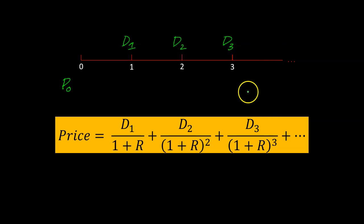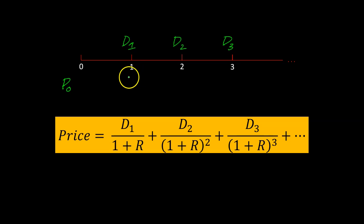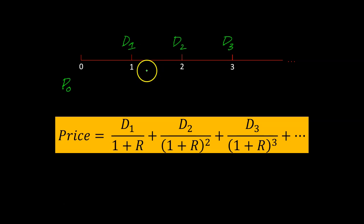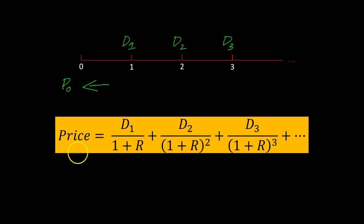This is a powerful result, because when we started, we said price today is a function of the dividend one year from now and the price one year from now — but remember that price at any given point is a function of future dividends, and that is what the dividend discount model says. It says that the price today of a stock is simply the discounted value of all the dividends that you're going to get from it.